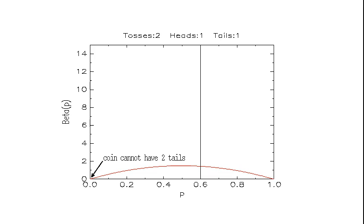The second toss is a head, so we know the coin has both a head and a tail, and the probability for P equal to one and P equal to zero are now both zero.